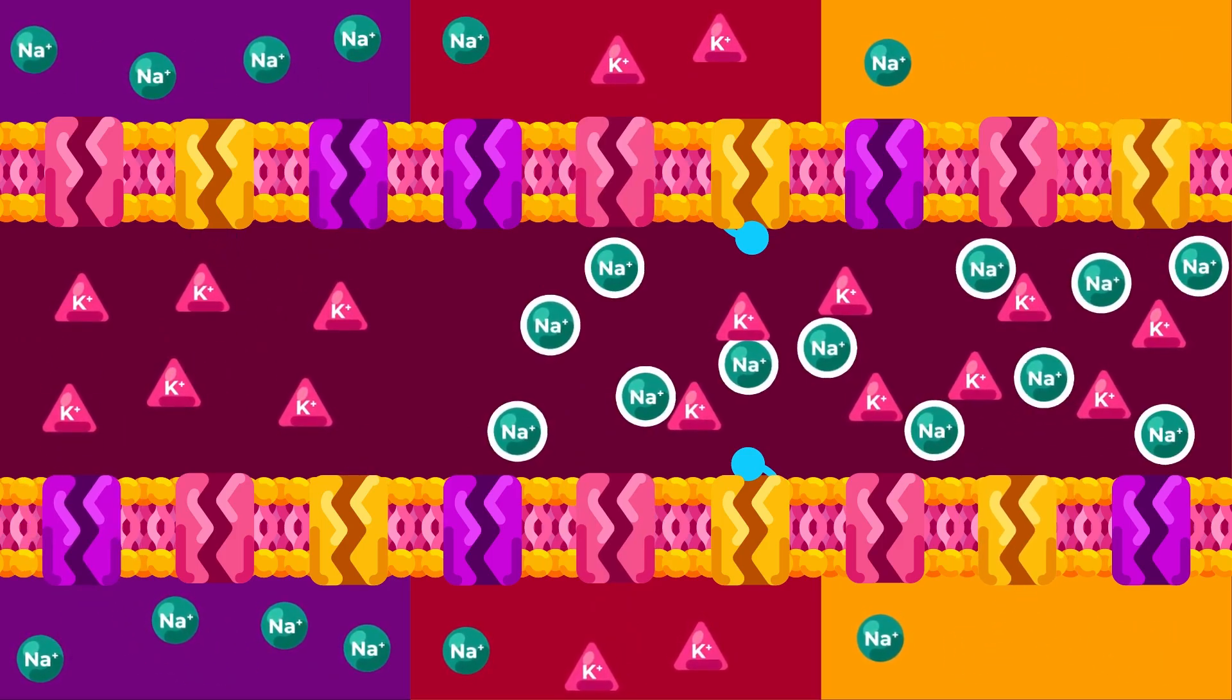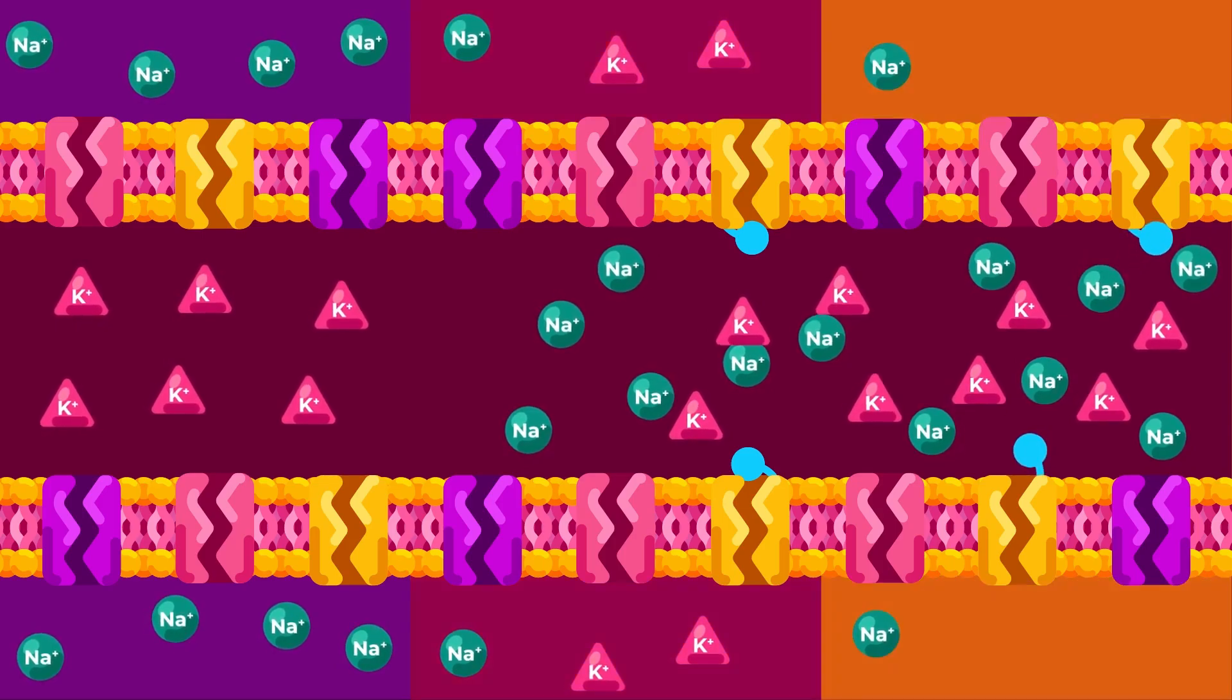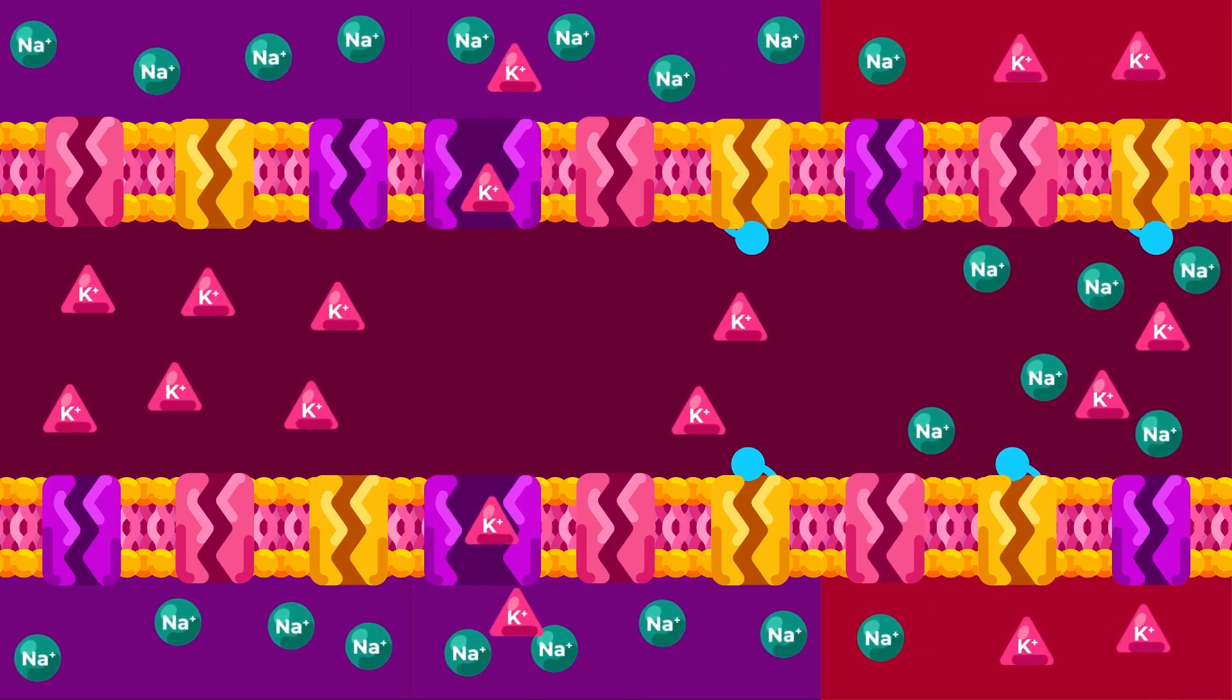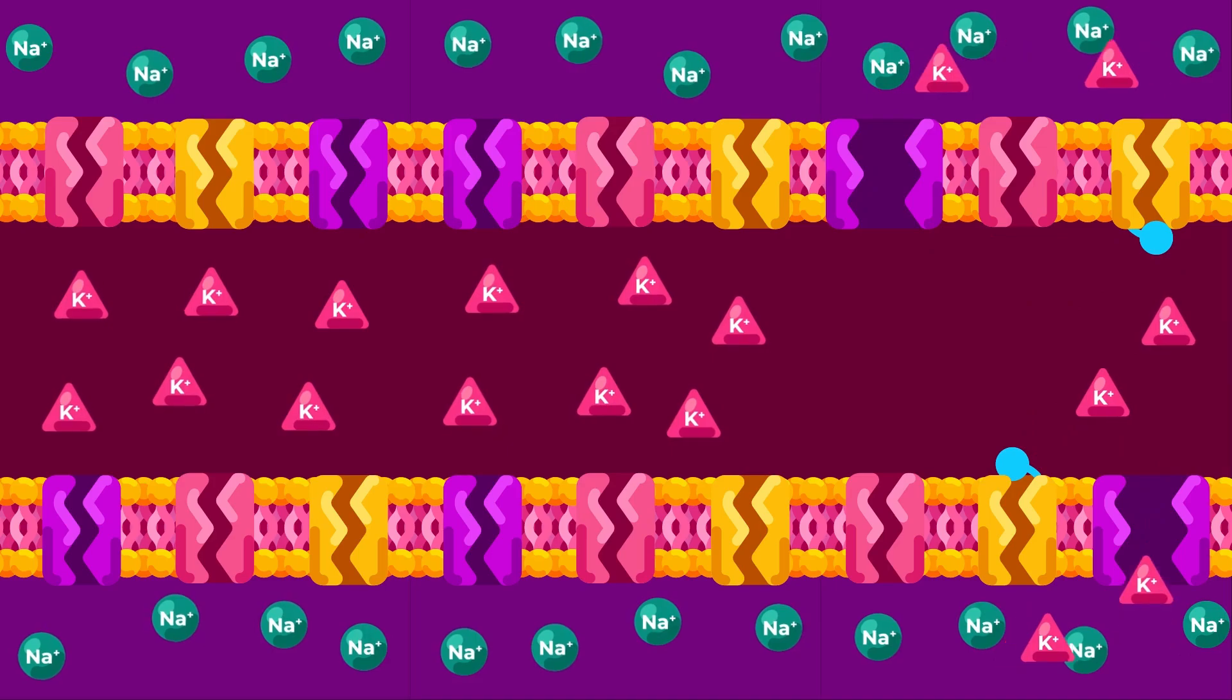The more sodium ions entering the cell, the more the change in membrane potential, which eventually builds up the required action potential for the nerve to fire and pass the nerve signal.